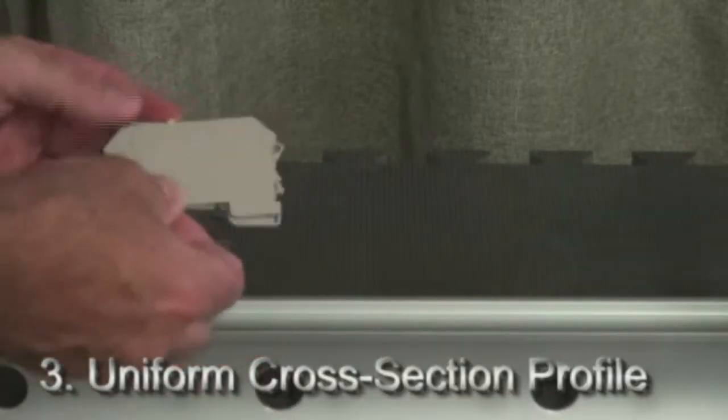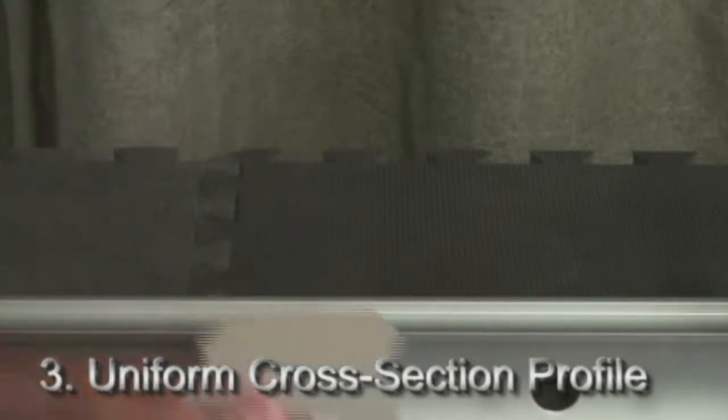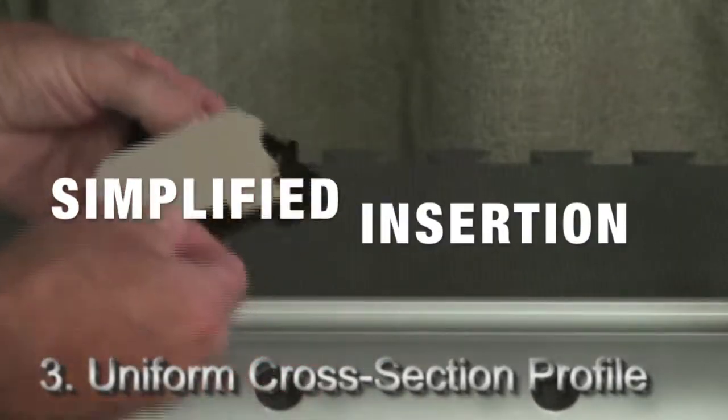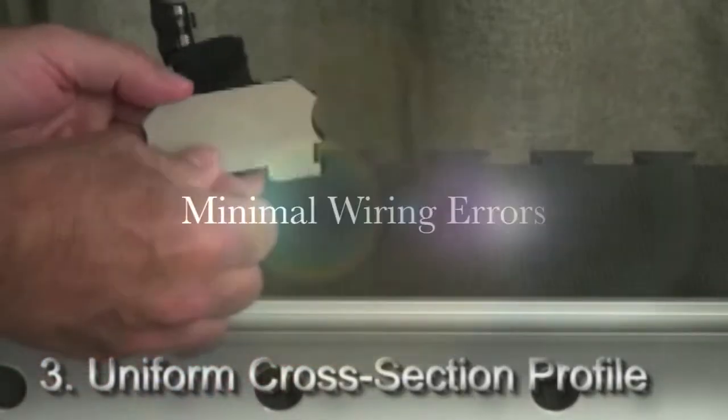All of the terminal blocks in the Weidmuller WMF series are uniform in cross section profile. This means that wire insertion is simpler and wiring errors are minimized.